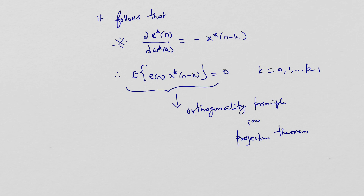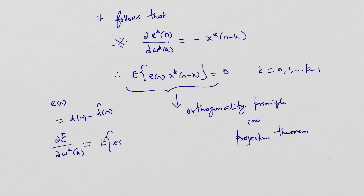To find the optimum filter coefficients, we set the rate of change of the performance measure zeta with respect to w*(k) equal to zero. This gives us: the expectation of e(n) multiplied by the rate of change of e*(n) with respect to w*(k), set equal to zero. Since that rate of change equals minus x*(n minus k), this becomes the expectation of e(n) times x*(n minus k) set equal to zero.